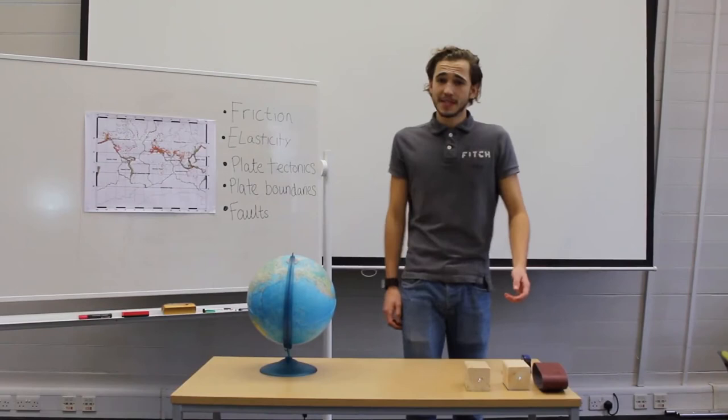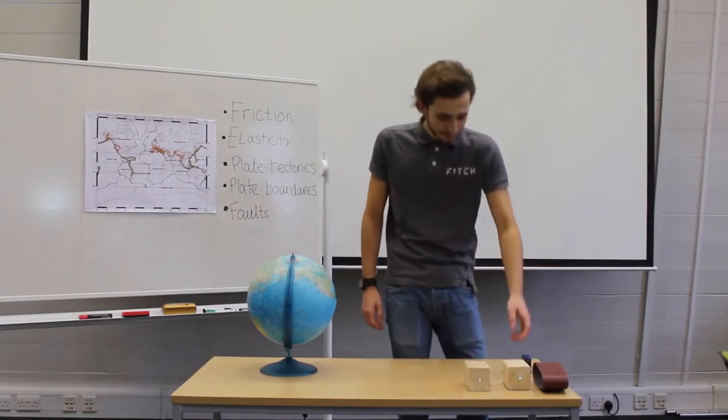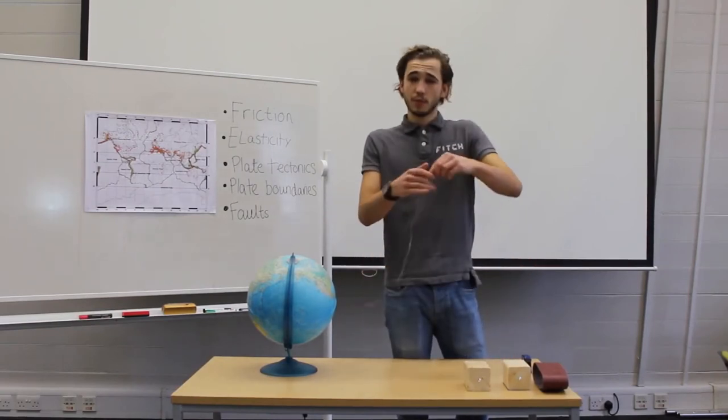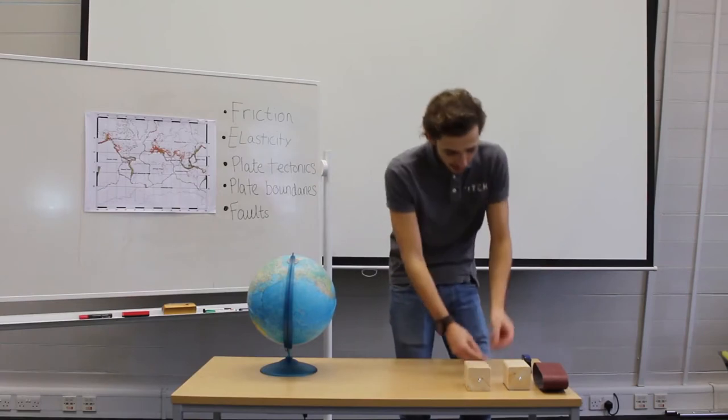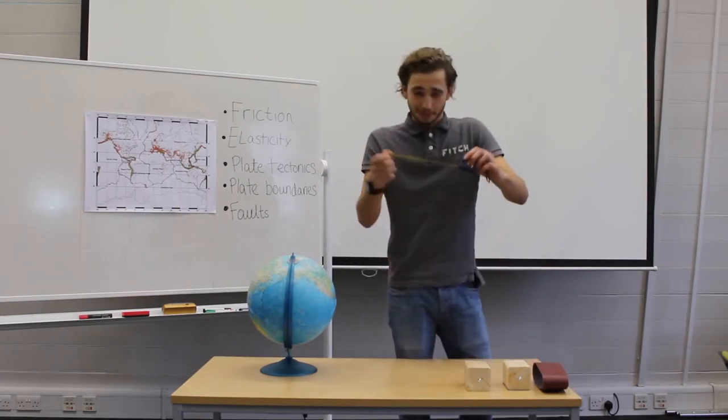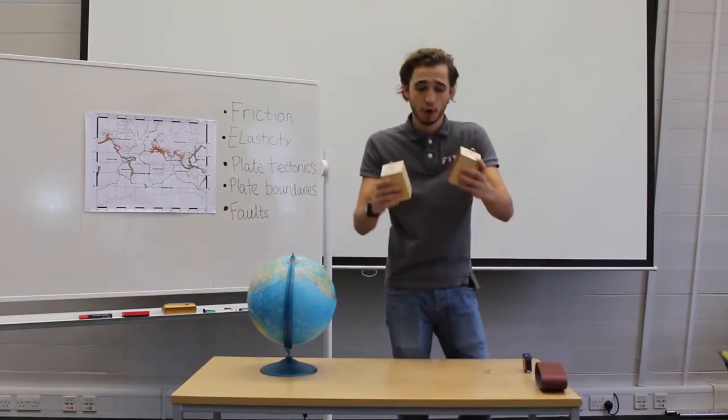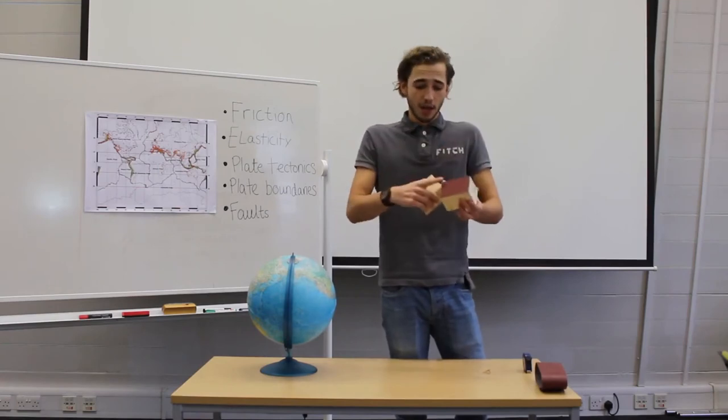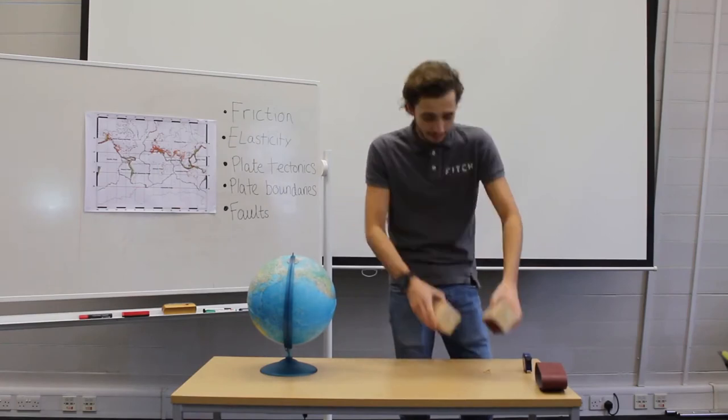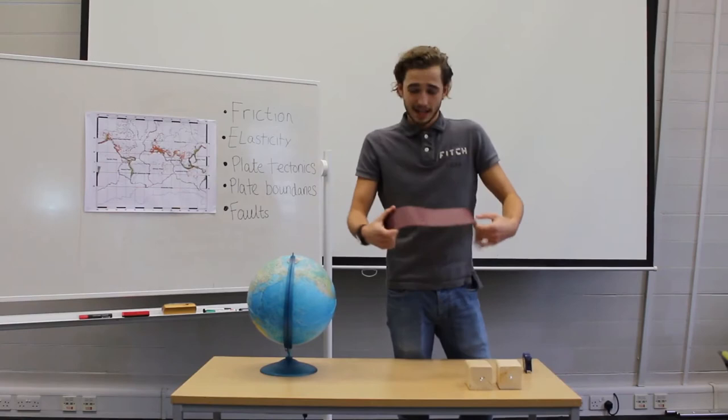Now let's gather up some of the materials that we're going to need to build our model. You'll need a piece of string with a rubber band attached to the end, a tape measure, two wooden blocks, both with eye screws attached at the end, and one with a piece of sandpaper glued to the bottom. And finally, a sanding belt.